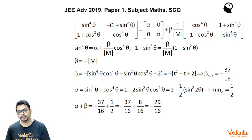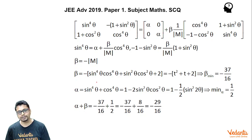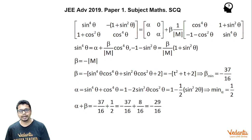Since (1 + sin²θ) can never be zero, you can cancel it on both sides, giving beta equals minus times determinant of M — consistent with what we obtained via Cayley-Hamilton. Substituting beta back, alpha equals sin⁴θ + cos⁴θ, again matching the earlier result. You can then minimize both and add the minimum values to get the answer.